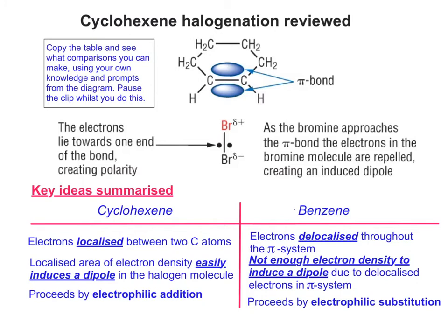What I've done here is highlighted or underlined the important language you need to be using when describing the two differences. Electrons are localised in cyclohexene but delocalised throughout the pi system in benzene. The localisation in cyclohexene leads to an area of high electron density that can easily induce a dipole, as you can see from the diagram, in the halogen. In benzene, this just doesn't happen because the delocalised electrons in the pi system are not electron-dense enough.